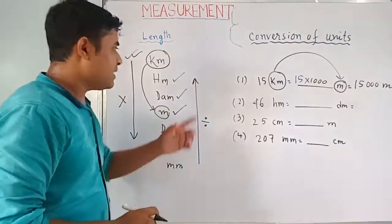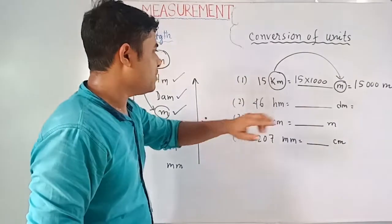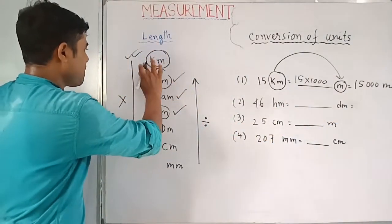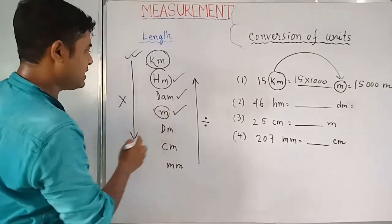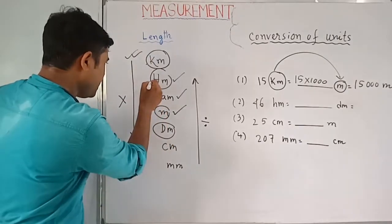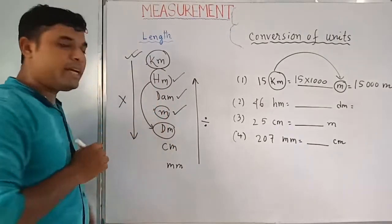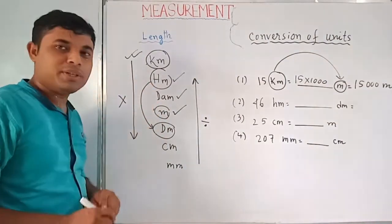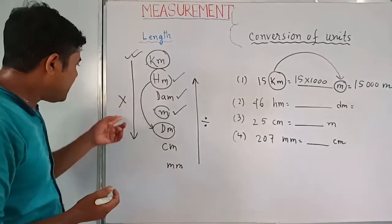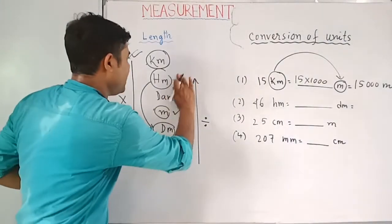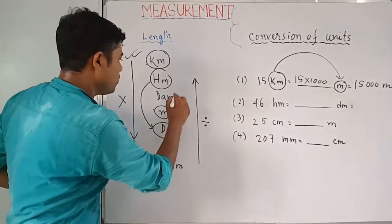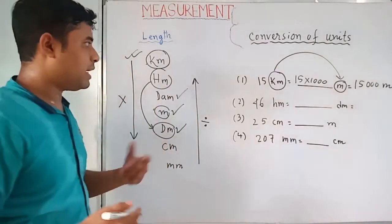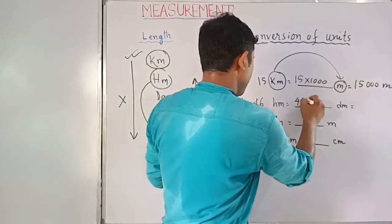Next example: 46 decameters to decimeters. Decameter is higher, decimeter is lower — moving higher to lower, so multiplication. Count the steps: 1, 2, 3 — three places, so multiply by 1000. 46 × 1000 = 46,000 decimeters.